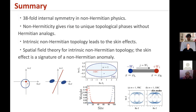In summary, we first show that non-Hermiticity changes the nature of symmetry and leads to a 38-fold internal symmetry. Another important consequence of non-Hermiticity is that it gives rise to unique topological phases without Hermitian analogs. We show that intrinsic non-Hermitian topology leads to the skin effect instead of conventional bulk-boundary correspondence. Then we develop a field theory of intrinsic non-Hermitian topology. From the field theoretical perspective, we demonstrate that the skin effect is a signature of a non-Hermitian quantum anomaly. Thank you so much.